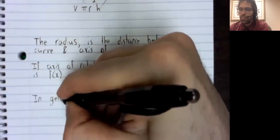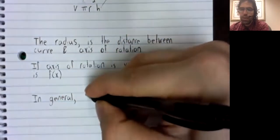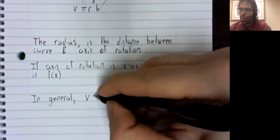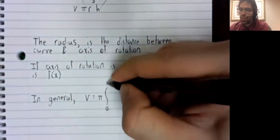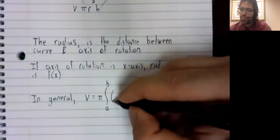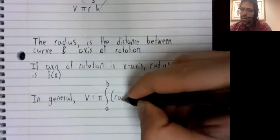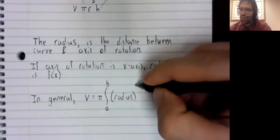But in general, the volume is pi times the integral from a to b of the radius squared.